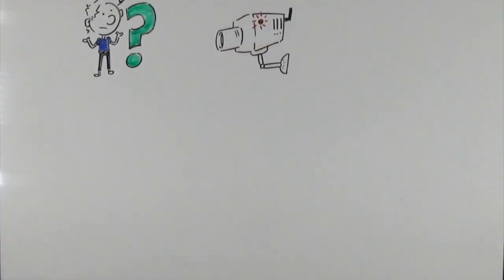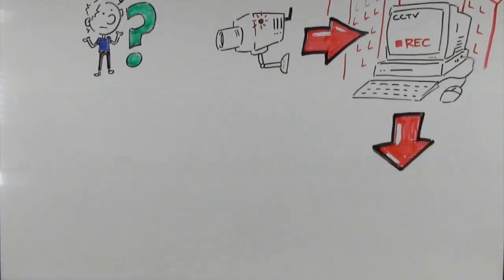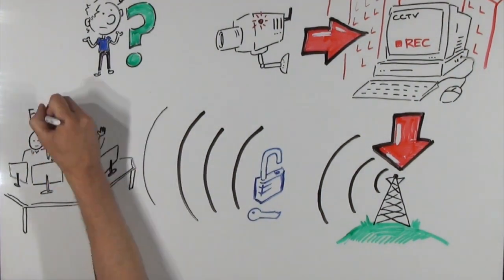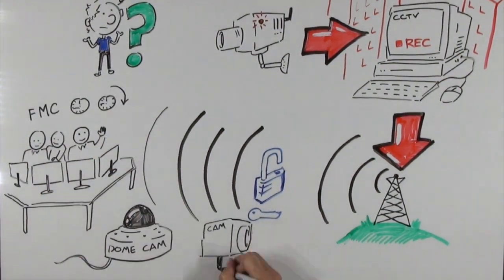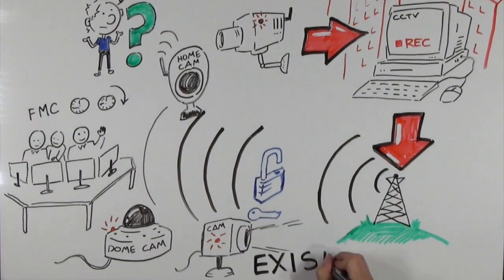Your CCTV cameras are connected to a recording device located somewhere in your building. This recording device is connected to the internet and video is securely sent to video monitoring station where operators are able to view it. Often, your existing camera setup can work with this service.